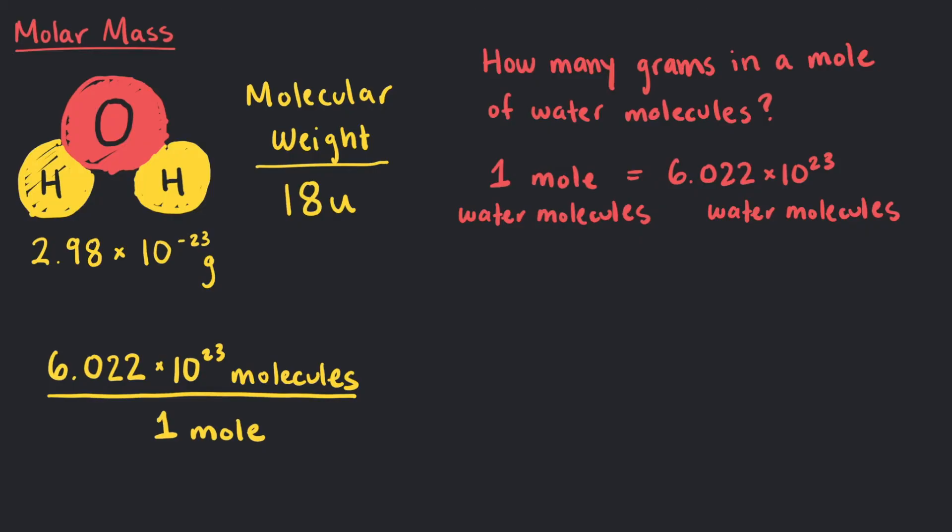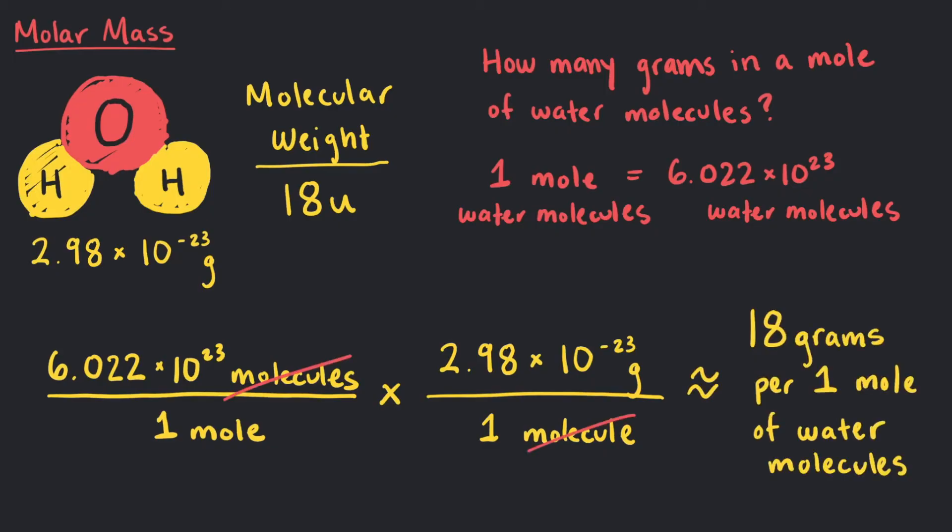So 6.022 times 10 to the 23 times 2.98 times 10 to the negative 23 grams equals about 18 grams per 1 mole of water molecules.